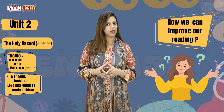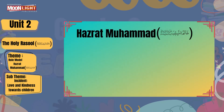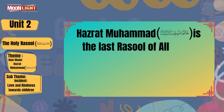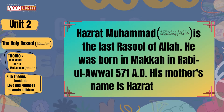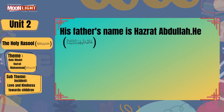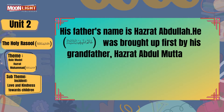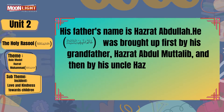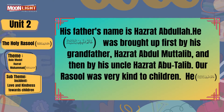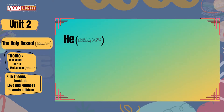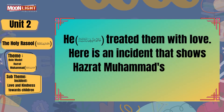Hazrat Muhammad salallahu alaihi wa sallam is the last Rasool of Allah. He was born in Makkah in Rabi-ul-Awwal, 571 AD. His mother's name is Hazrat Amina and his father's name is Hazrat Abdullah. He was brought up by his uncle Hazrat Abu Talib. Rasool salallahu alaihi wa sallam was very kind to children. He salallahu alaihi wa sallam gave them fruit. He salallahu alaihi wa sallam treated them with love. Here is an incident that shows Hazrat Muhammad's love for children.